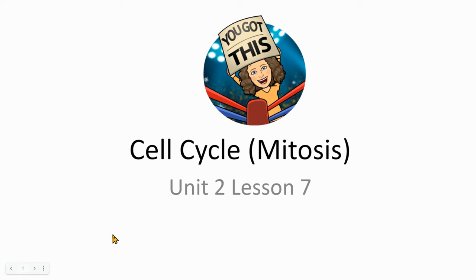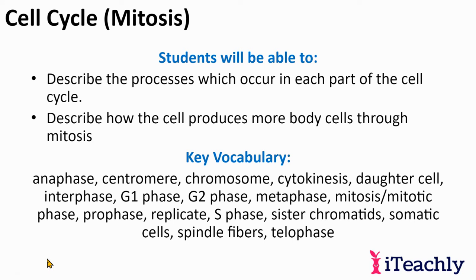Hey, this is my presentation on the cell cycle and mitosis. This is chapter six in your OpenStax book. By the end of this presentation, you should be able to describe the processes which occur in each part of the cell cycle and describe how the cell produces more body cells through mitosis.